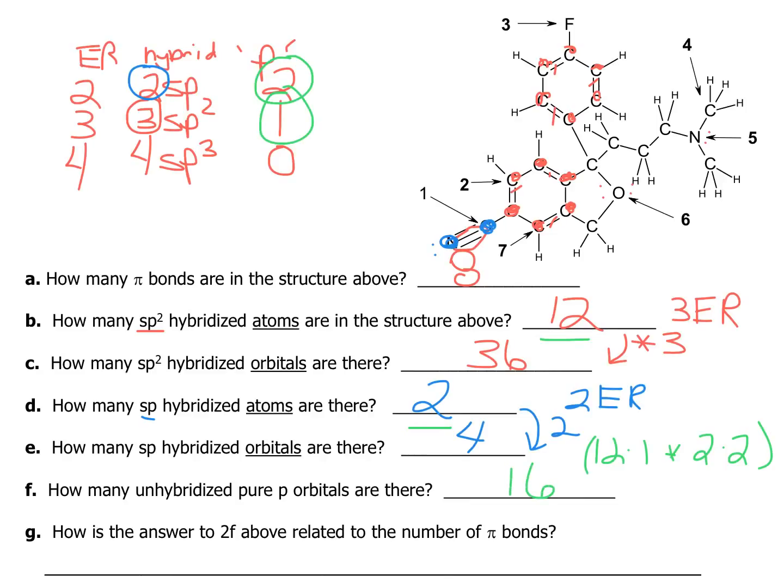But there's a much easier way to answer this. You notice that the difference between 8, which is the number of pi bonds, and 16, the number of unhybridized p orbitals, is a multiple of 2. And that's because you need two unhybridized p orbitals to overlap and make one pi bond. So unhybridized p orbitals are simply your pi bonds times 2. And that's all.